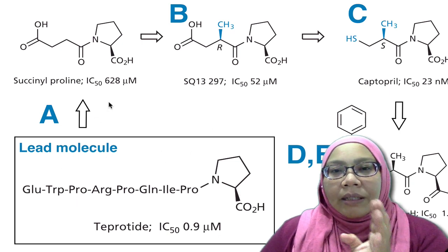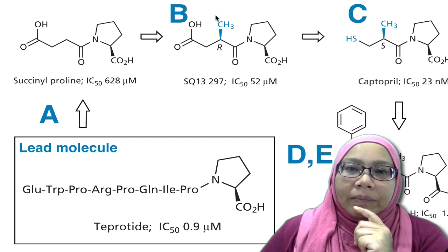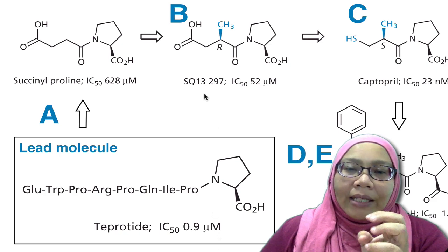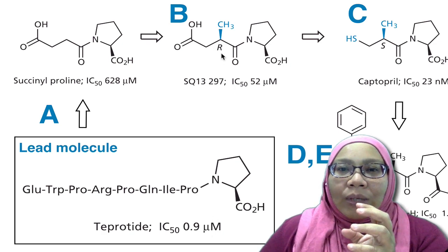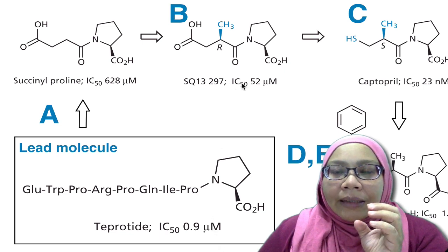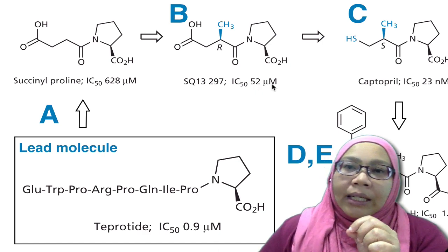The next milestone toward captopril is the addition of a methyl group, and the whole molecule is given the code name SQ13297. Once they added the methyl group, the IC50 value dropped to 52 micromolar. This is a tip: the smaller the value of the IC50, the more potent the molecule. The concept is like a chili padi concept — chili padi is smaller but more spicy than a normal chili.